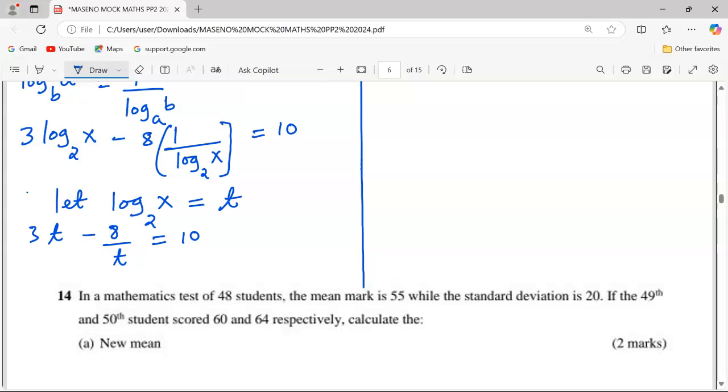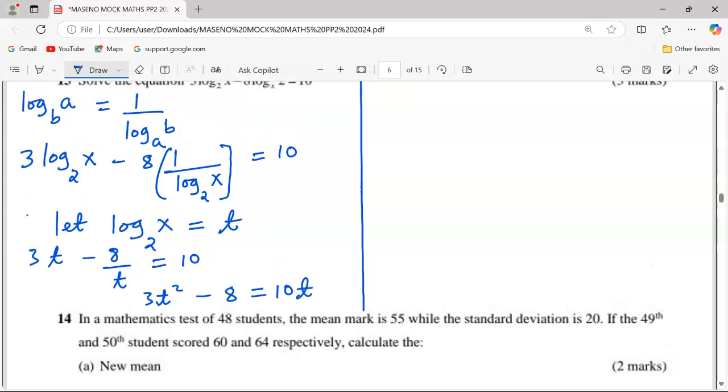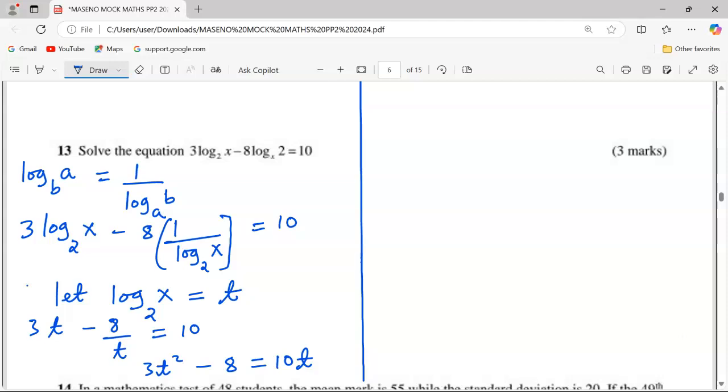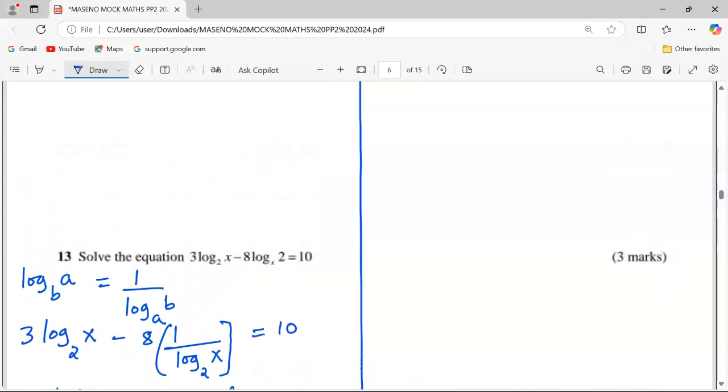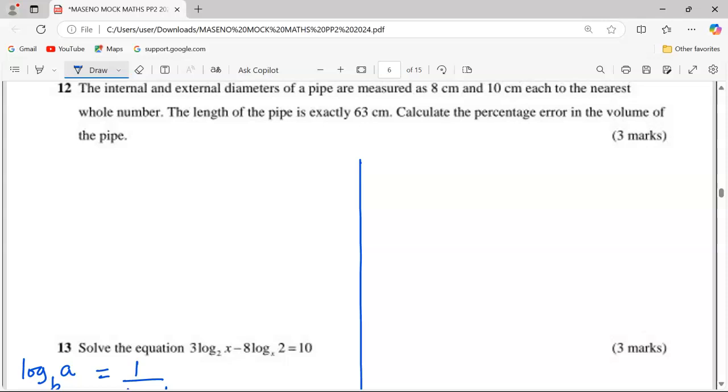This can become 3t² - 8 = 10t. The equation is now taking a quadratic shape, whereby we can rearrange it to have 3t² - 10t - 8 = 0.